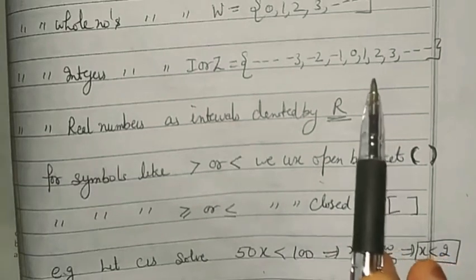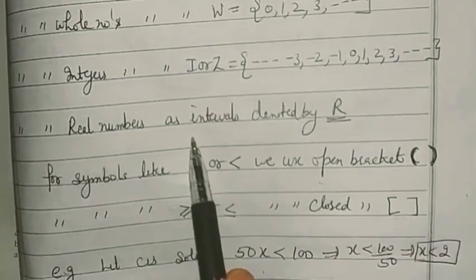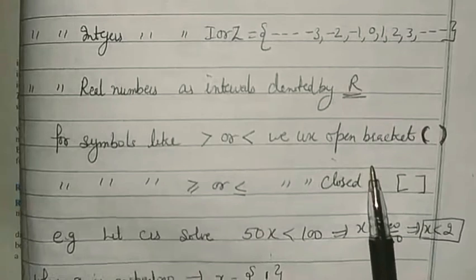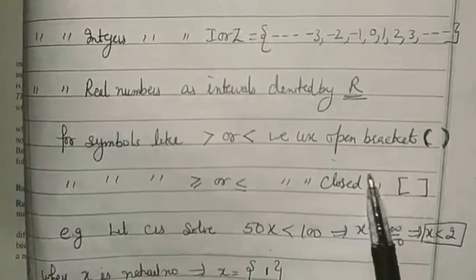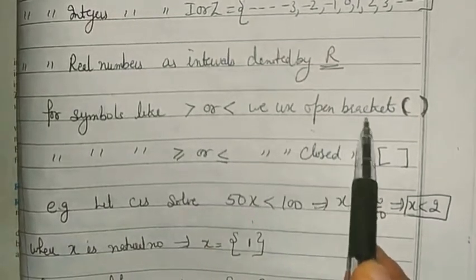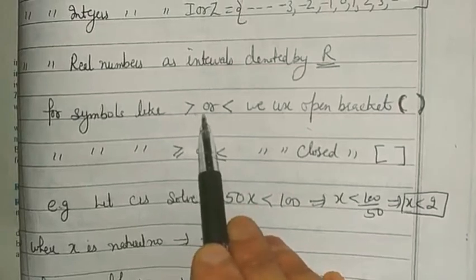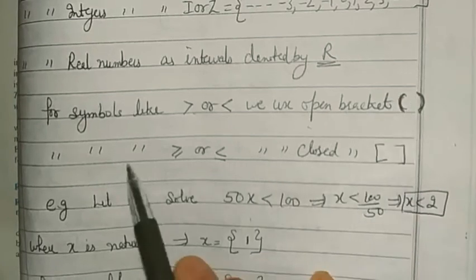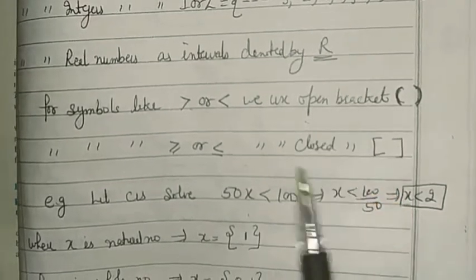Since there are infinitely many real numbers between any two numbers, you cannot list them — you must use intervals. Real numbers are denoted by bold R in NCERT books. For strict inequality symbols (greater than or less than) we use open brackets, and for symbols like greater than equal to and less than equal to we use closed brackets. Curly brackets are used for listing individual elements.